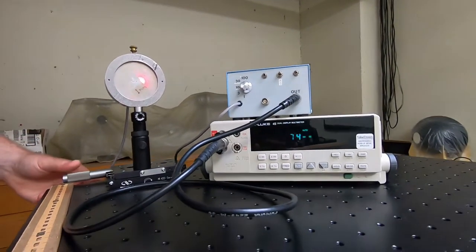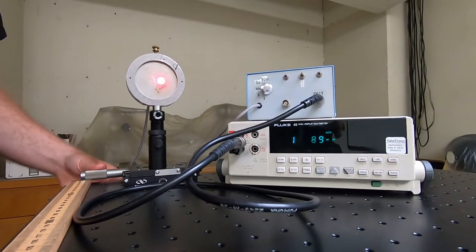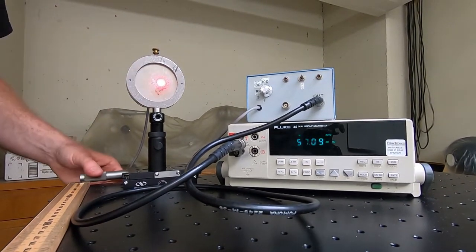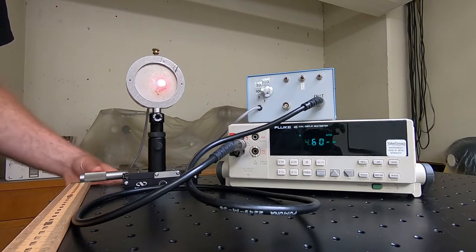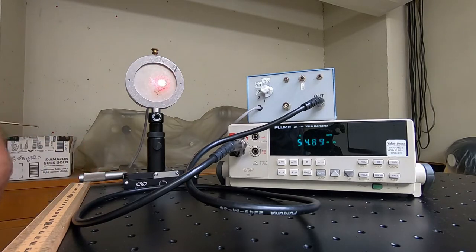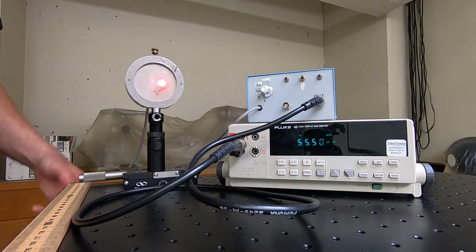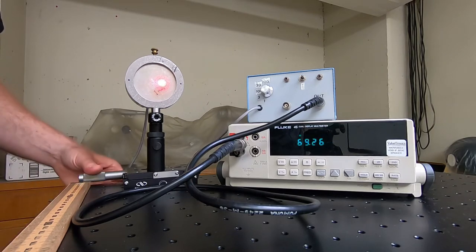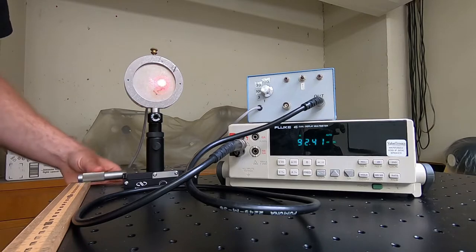The way I'm going to take data is I'm going to slide the detection pinhole to many different locations in X and pause and take voltage data, which is proportional to the intensity of the light that's going through this one millimeter hole here.